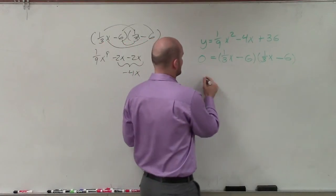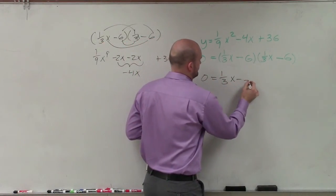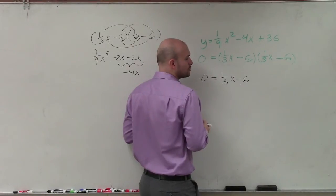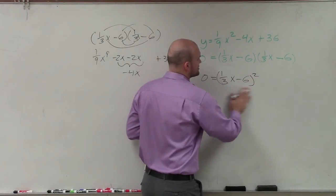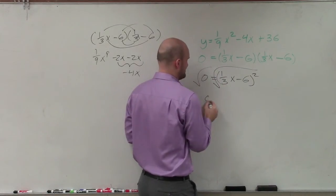Now, I can rewrite this as a binomial squared. And now, apply my square root method to solve, not the zero product property.